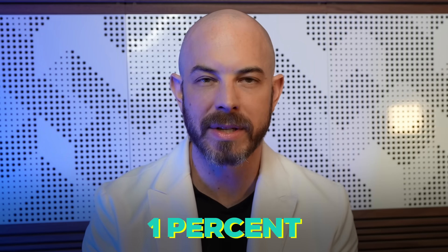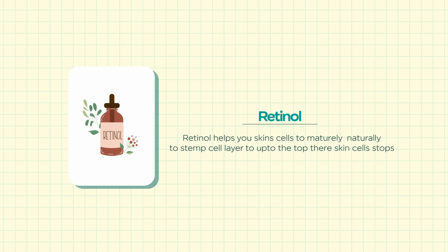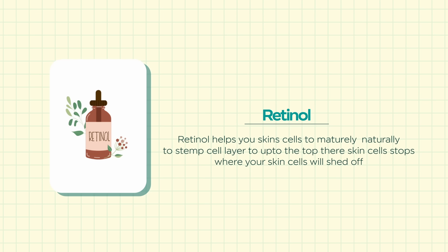If you prefer to use salicylic acid as a leave-on product, I would recommend getting it around 1%. Some people do like the 2%, but it does risk a little more irritation on the skin. You can use it as a spot treatment or as a leave-on treatment broadly over the areas that you're prone to getting sebaceous filaments. The other product that can work really well for sebaceous filaments is a retinol. Retinol or a retinoid medication helps your skin cells to mature naturally from the stem cell layer up to the top where your skin cells will shed off, and it helps reduce the likelihood of cells getting plugged up on the surface, which could lead to blackheads.